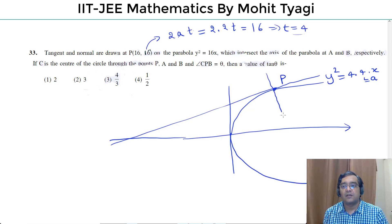Okay, tangent and normal. So this is A, and this is B.